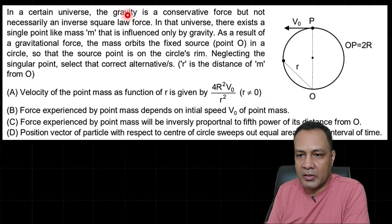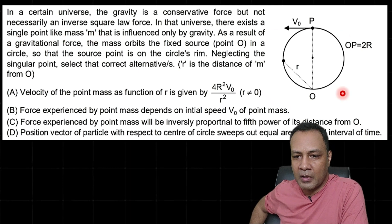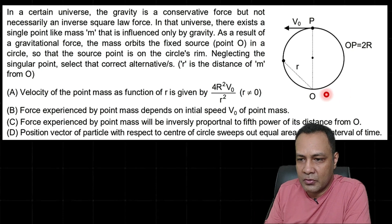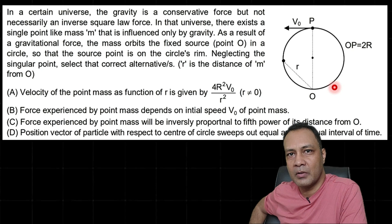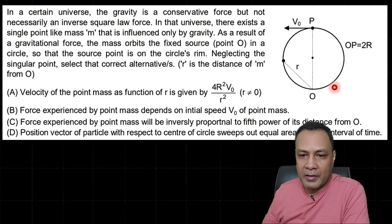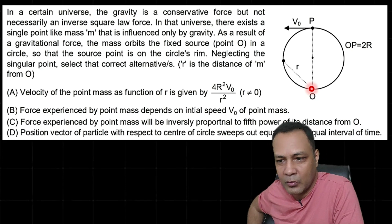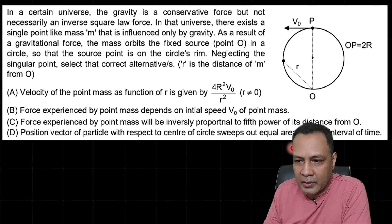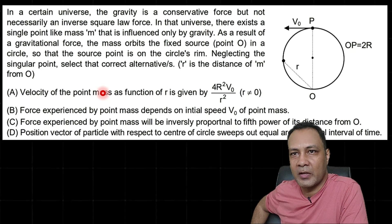The question states: in a certain universe, gravity is a conservative force but not necessarily an inverse square law force. In that universe there exists a single point-like mass m influenced only by gravity. As a result of the gravitational force, the mass orbits a fixed source O in a circle such that the source point O is on the circle's rim and the particle is also moving on the circle's rim. We have to find the velocity as a function of r, how the force varies with r, and whether the particle follows Kepler's second law.